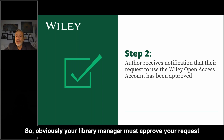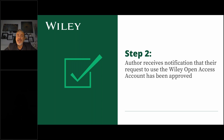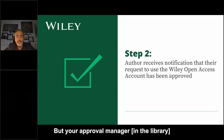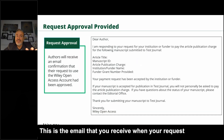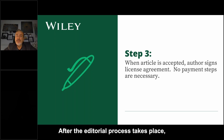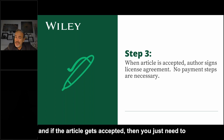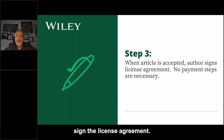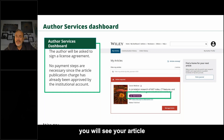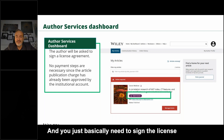Once that is done, you will receive notification that your request to use the Wiley Open Access account has been approved. Your library manager must approve your APC fund request at the submission stage — so you still don't know whether your article will be accepted. After the editorial process takes place and the article gets accepted, you just need to sign the license agreement — no additional payment steps are necessary. When you log into your Author Services dashboard, you will see your article with the Open Access icon already displayed, and you just need to sign the license.